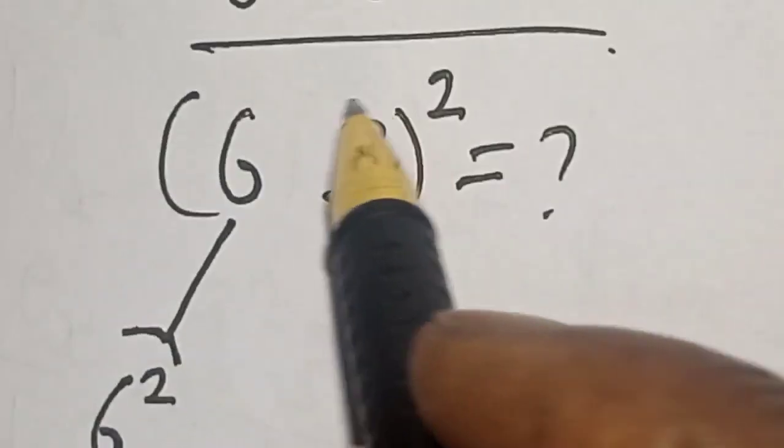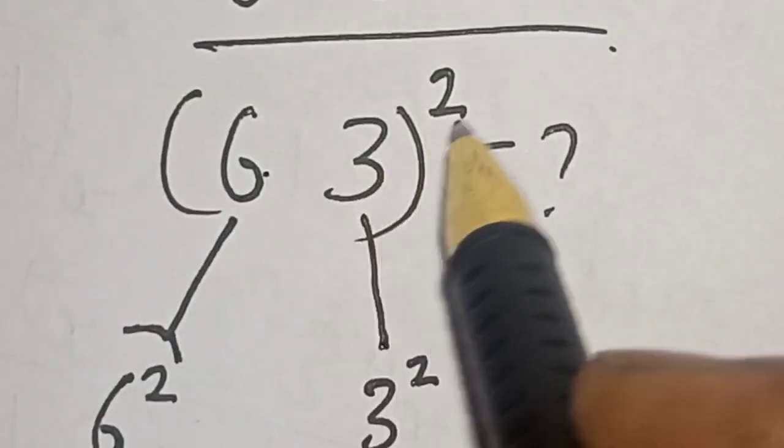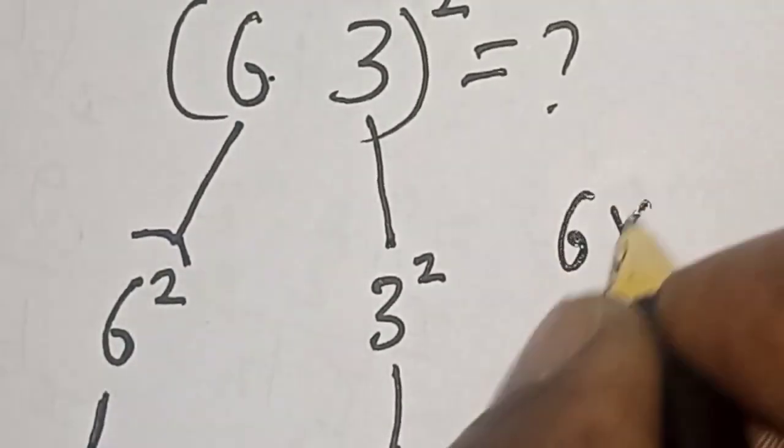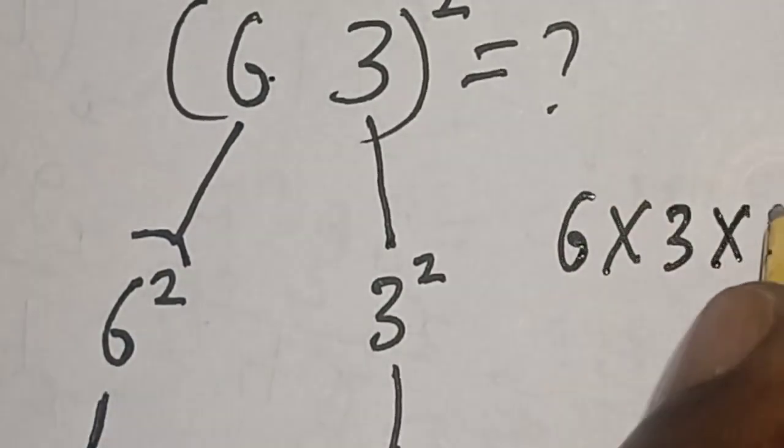This is 3609. And remember, we have this as 63 and this is, this is 6 multiplied by 3 multiplied by 2.